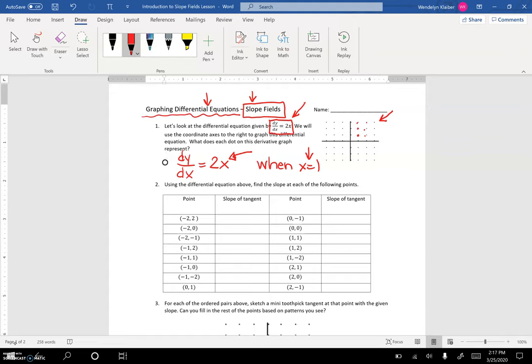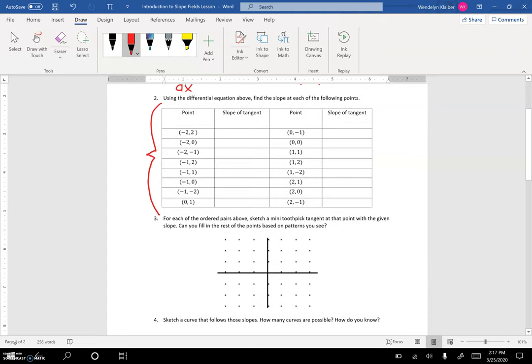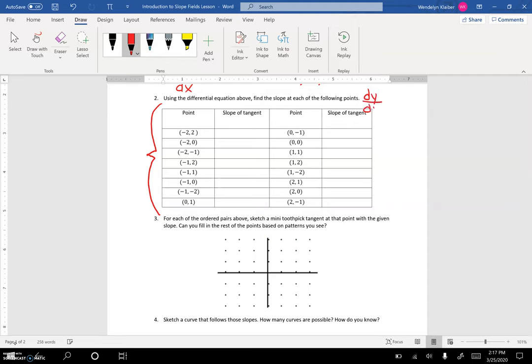Before we start graphing our differential equations, let's start with what we did back in Algebra 1. Let's make an xy table. I'm given the point (-2, 2), which is in quadrant 2. If we plug that into our differential equation, we notice it's only dependent on the x value. Since x is -2, 2 times -2 is -4. Let's keep going. The next point is (-2, 1). Again, we're only dependent on x, so 2 times -2 is -4. We continue that pattern.